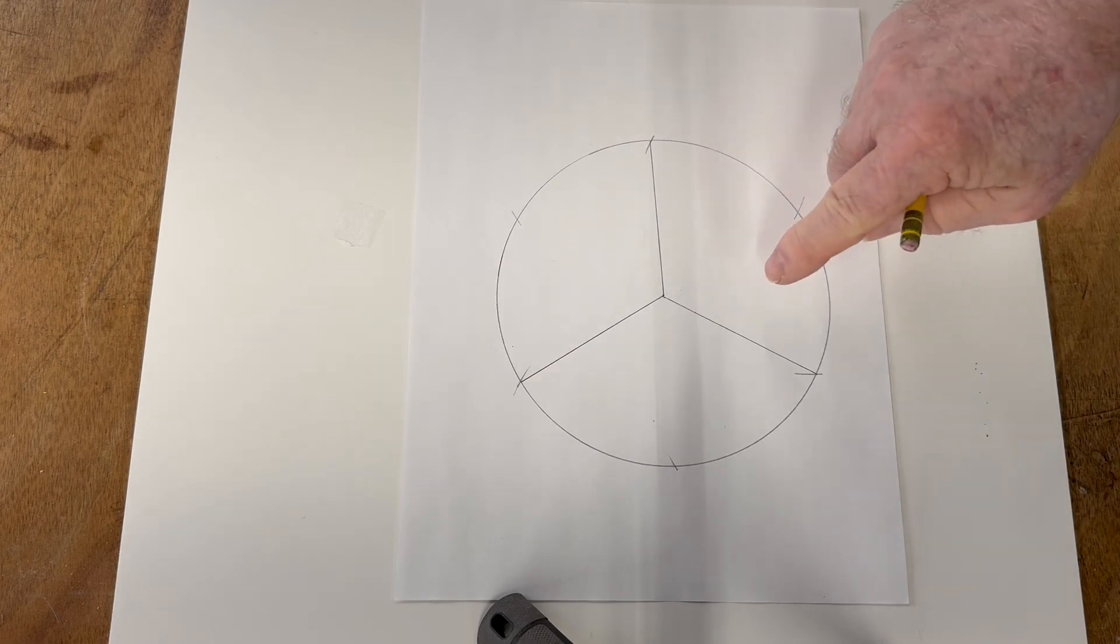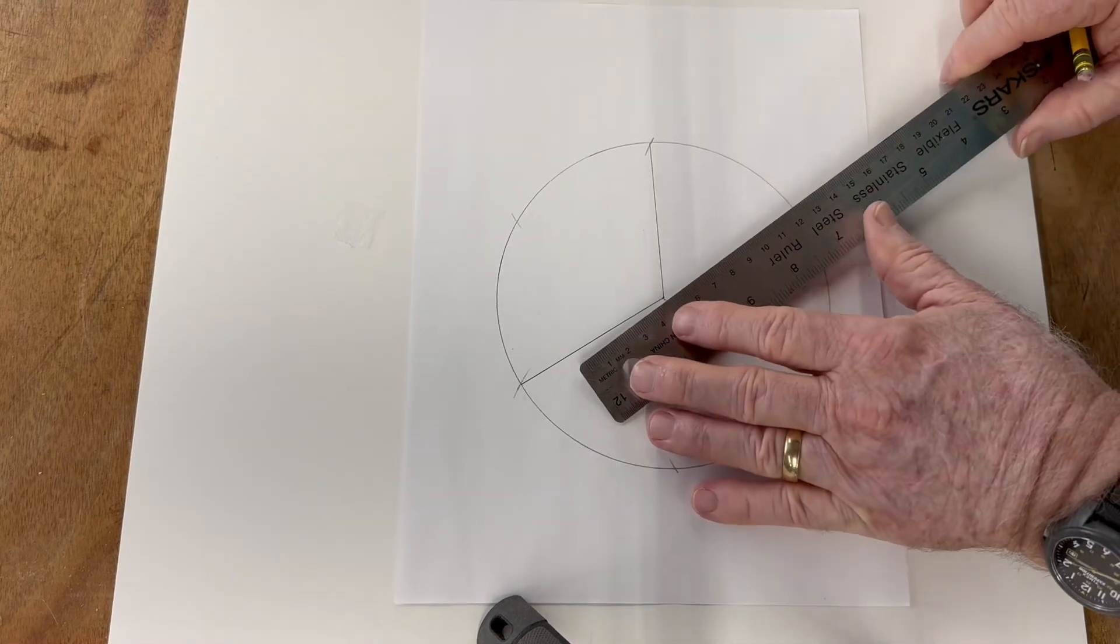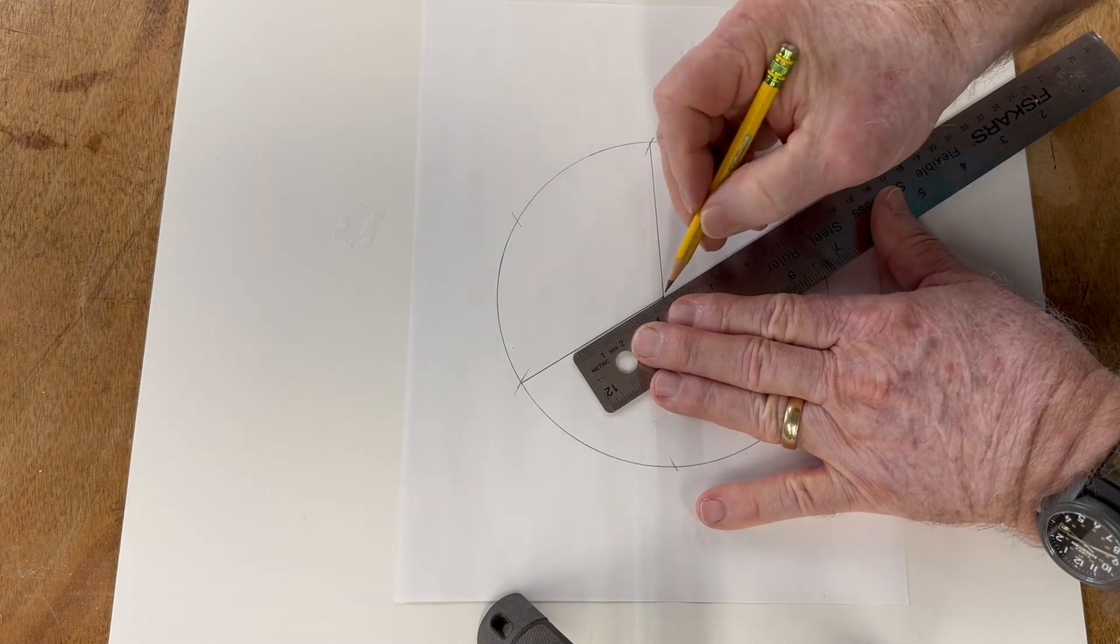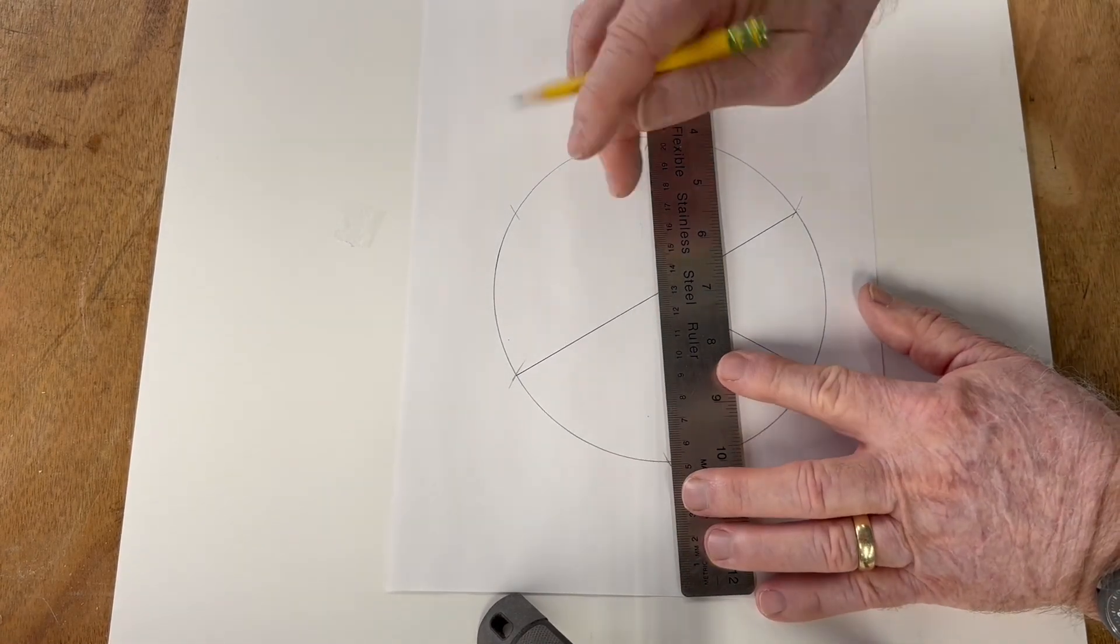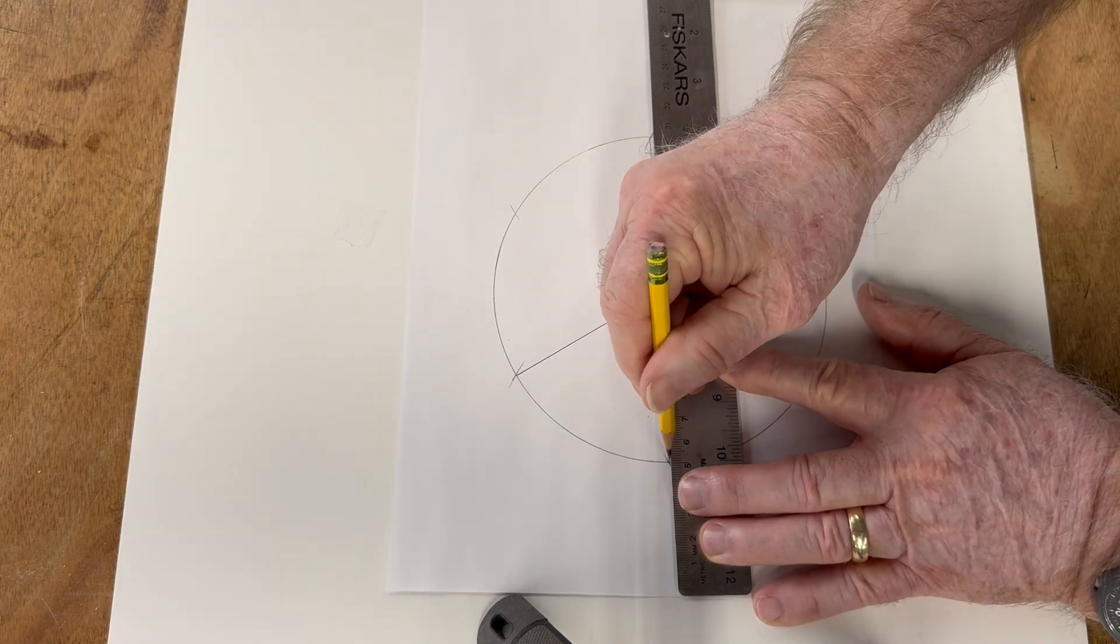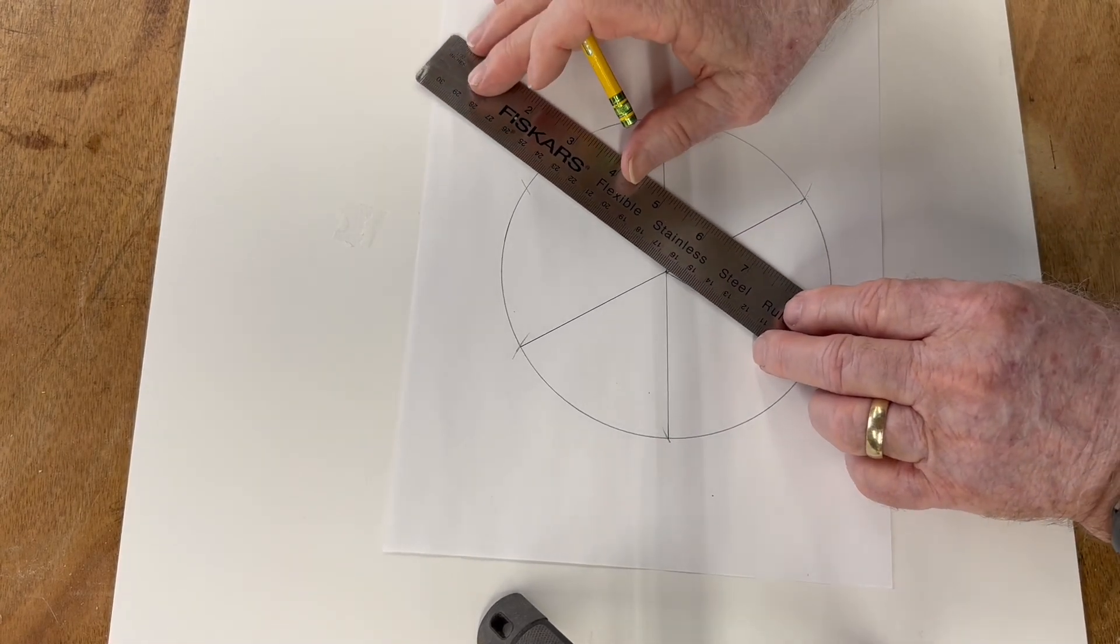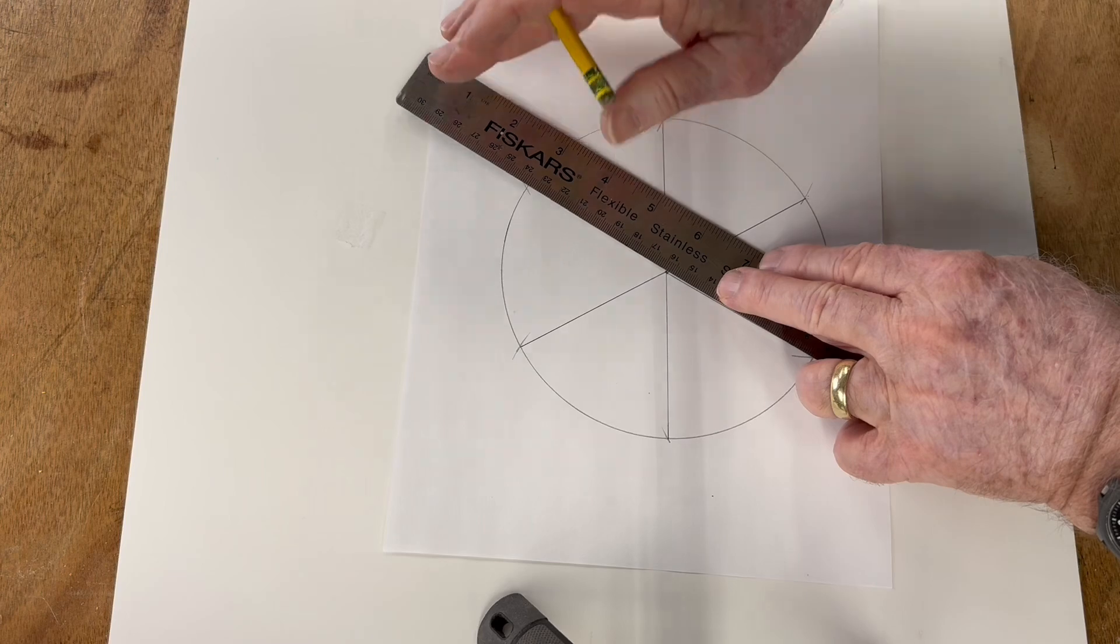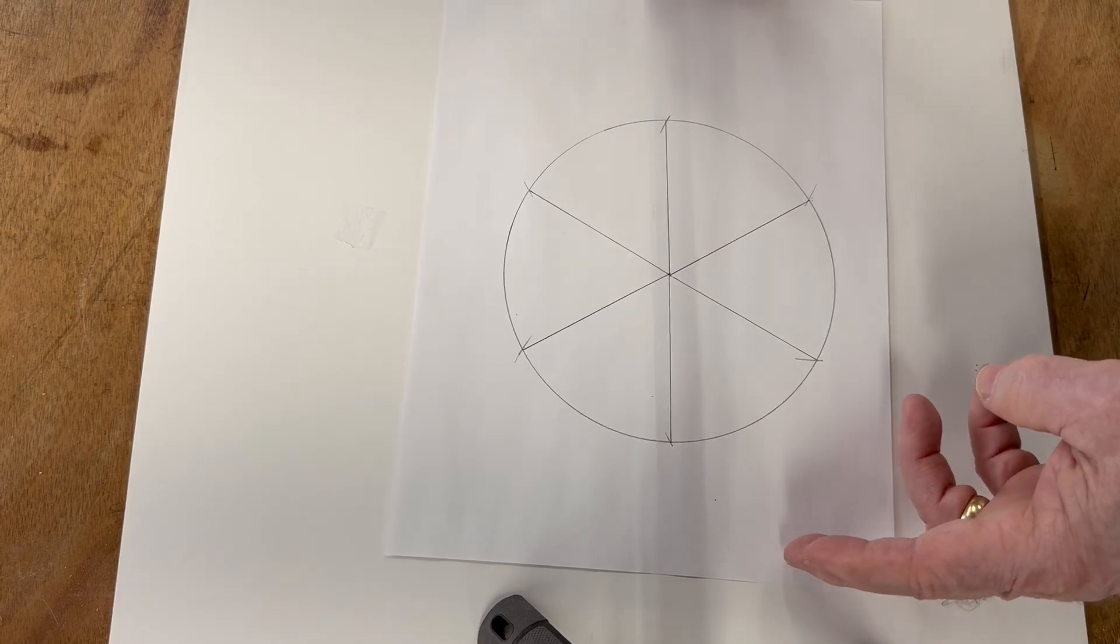Now, if I want to make this into a six, all I need to do is connect these other three points. Now that divides the circle into six parts.